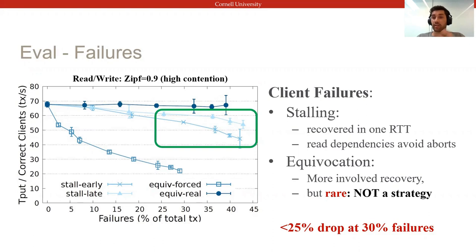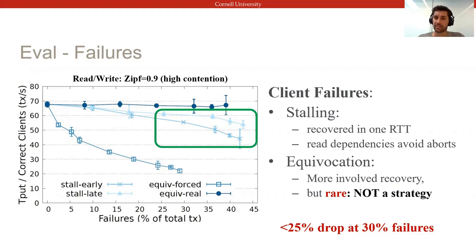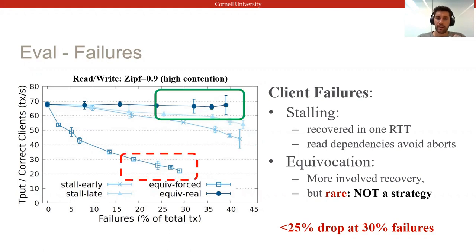In most cases, correct clients don't even have to abort their own transactions, instead requiring only read dependencies on slow transactions.